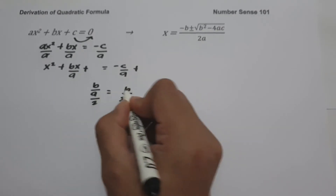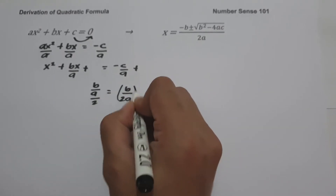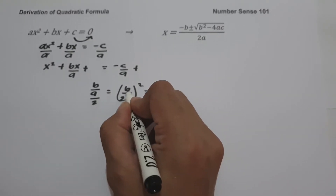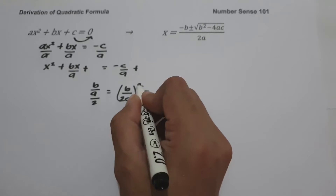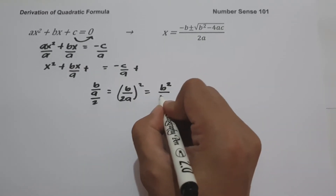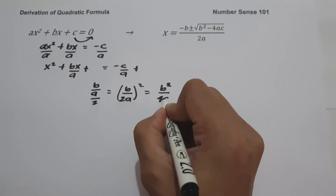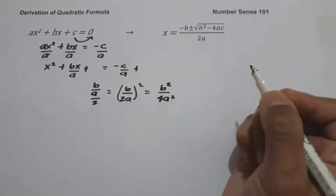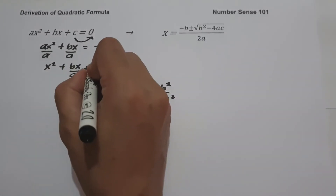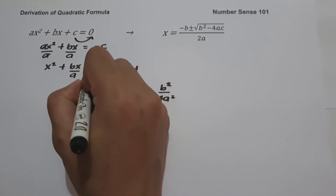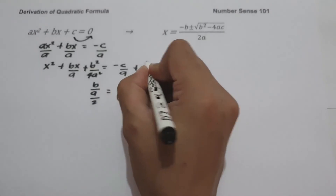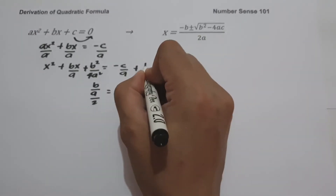That is 2 times a. Then we square that value: (b/2a)² = b²/4a². So we add b²/4a² to both sides of the equation.